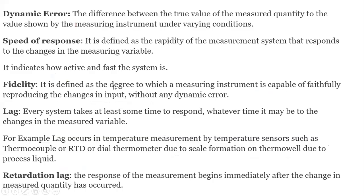Dynamic error is the difference between the true value of the measured quantity and the value shown by the measuring instrument under varying conditions. The speed of response is defined as the rapidity with which a measurement system responds to changes in the measuring variable — it basically indicates how active and fast the system is.